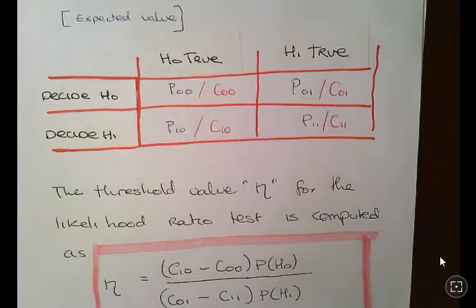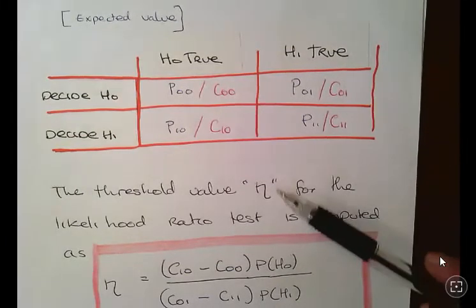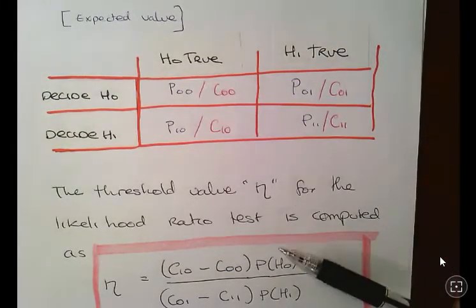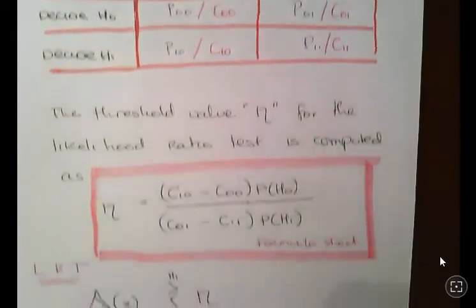So the threshold value, I'm just going to call it threshold for the likelihood ratio test, can be computed as follows. This is a bit to remember, okay?